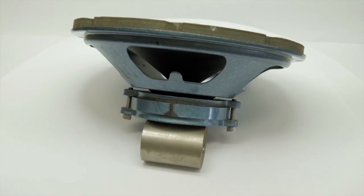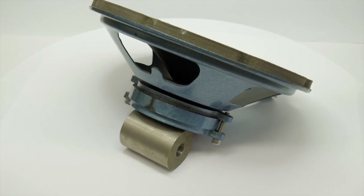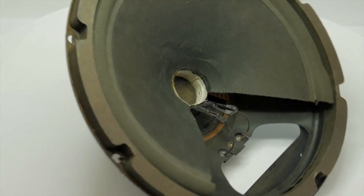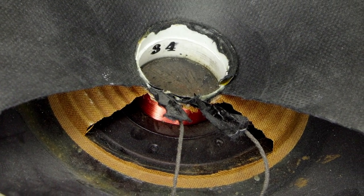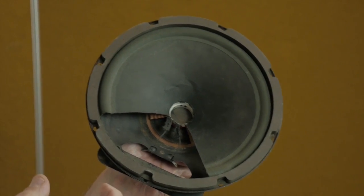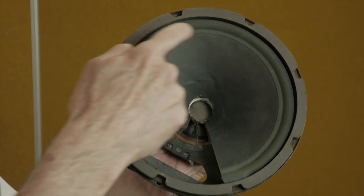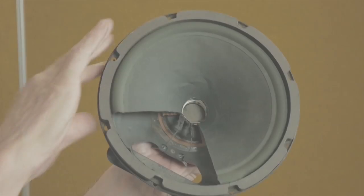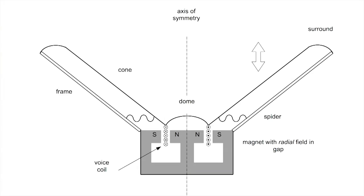Here is a cutaway of an actual loudspeaker. A circular coil of wire, called the voice coil, is attached to a cone. The voice coil sits in the gap of a circular magnet. The magnetic field in the gap is radial, pointing directly outward or directly inward. The brown flexible spider keeps the voice coil centered in the gap so that it does not rub on the magnet. The black flexible surround attaches the open end of the cone to the frame of the loudspeaker. Here is a diagram of a loudspeaker.